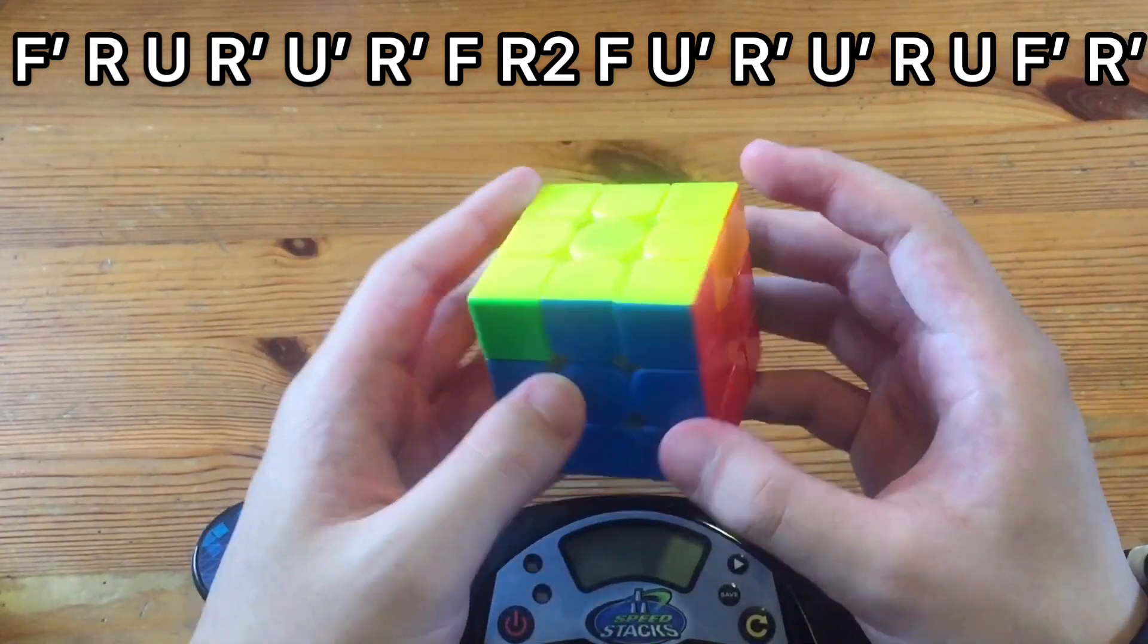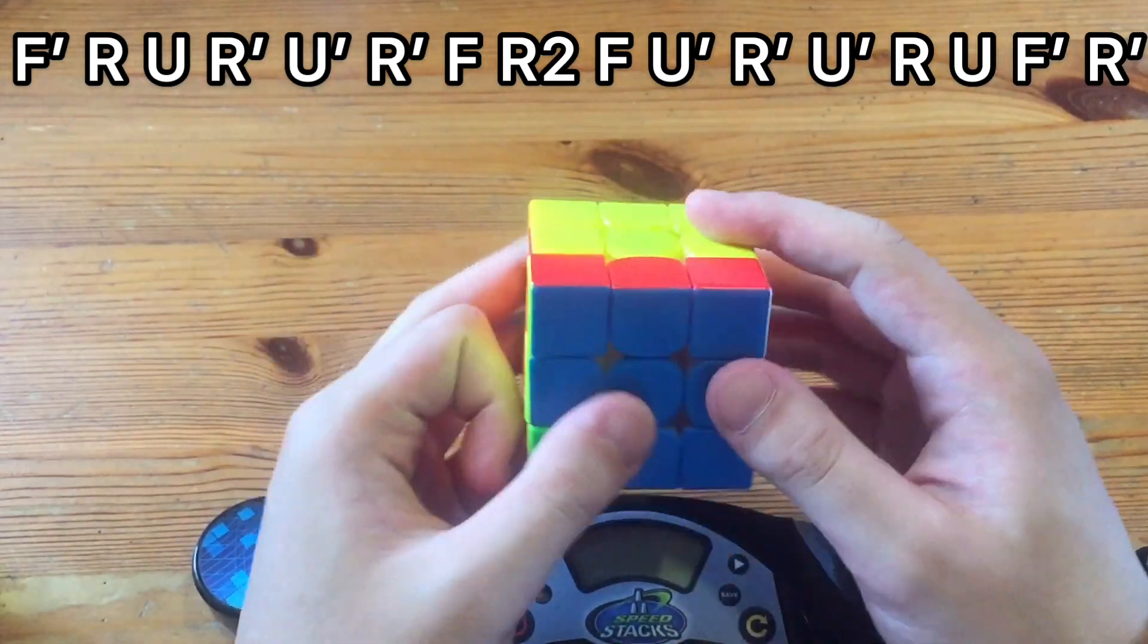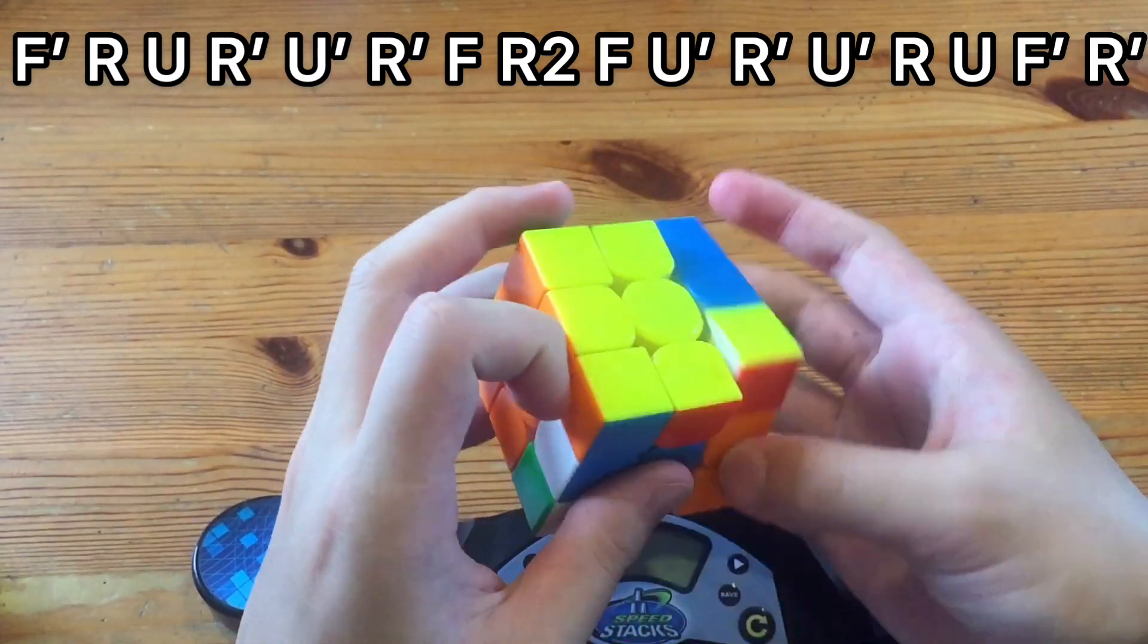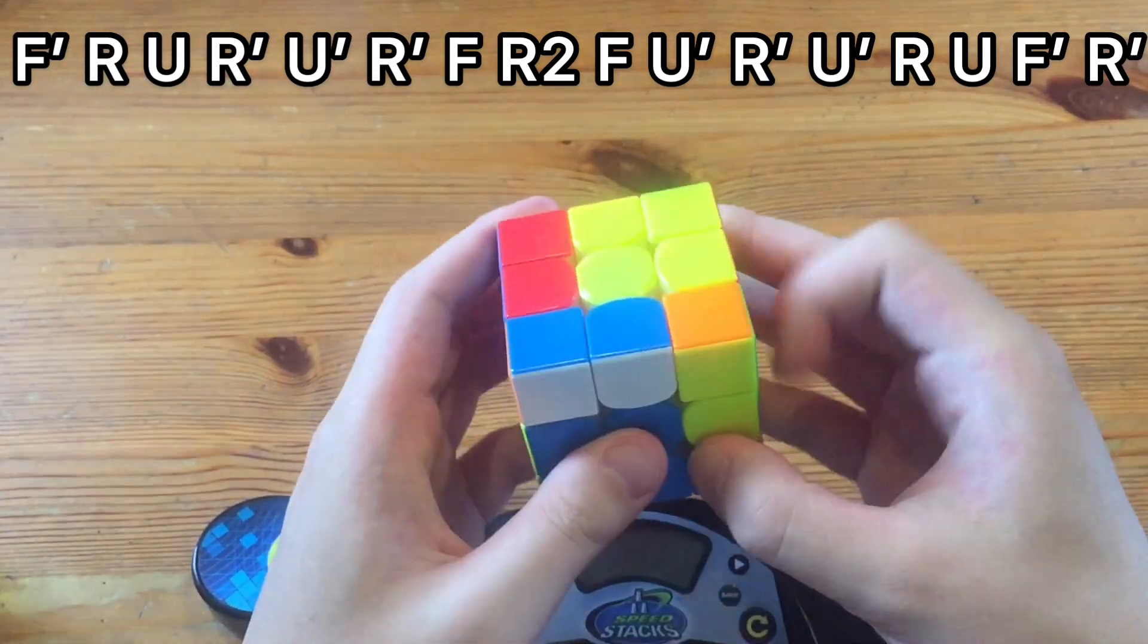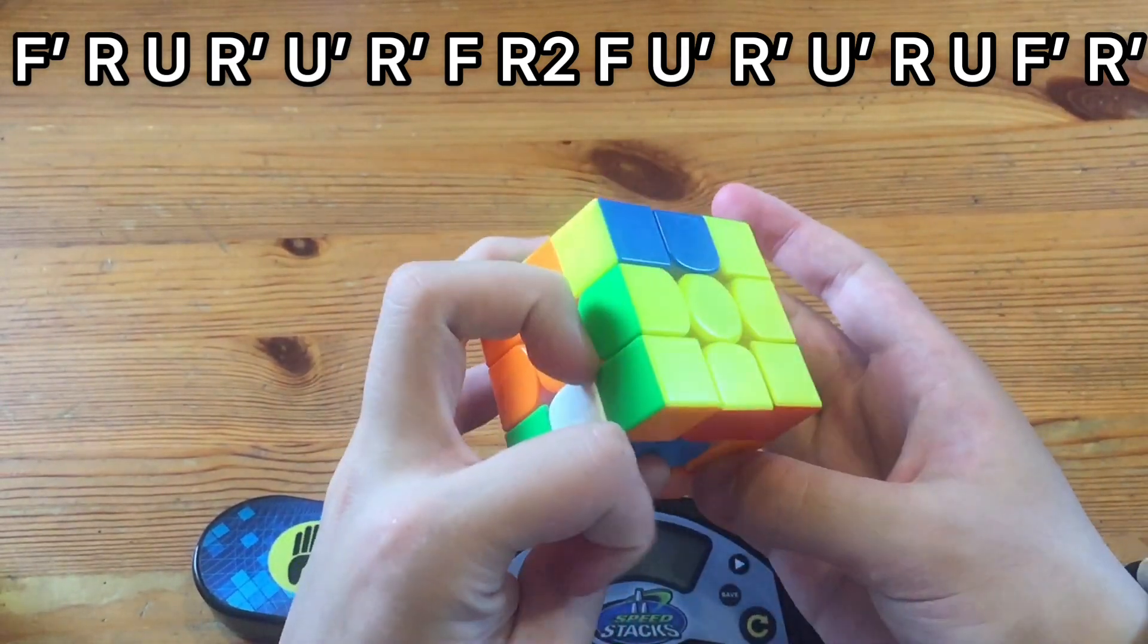And now the last one, it's probably the objectively optimal way. However, just like the Tperm, I can't do it as fast. So basically you do left index, pinch, and here the end is the same.